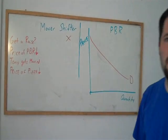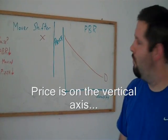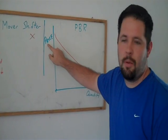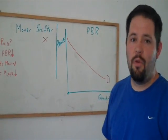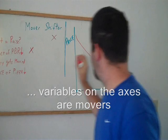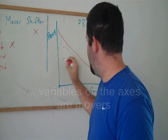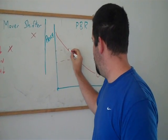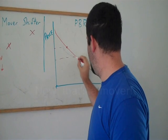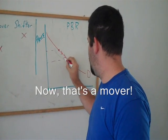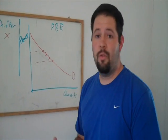Now, what if the price of PBR decreases? Well, right here's the price of PBR. That would mean that it is a mover. The price of PBR decreases from there to there. We move along the demand curve. And that is what we would call a mover.